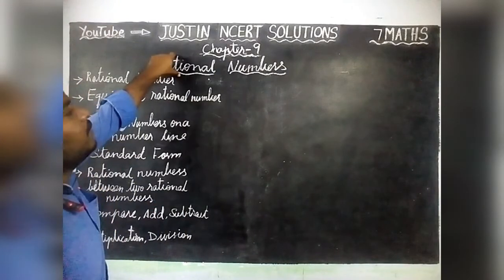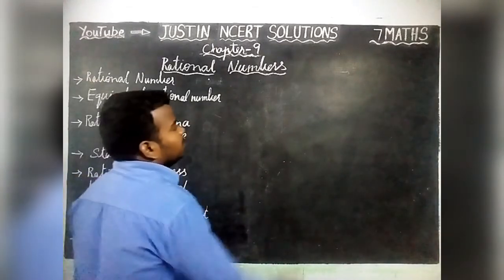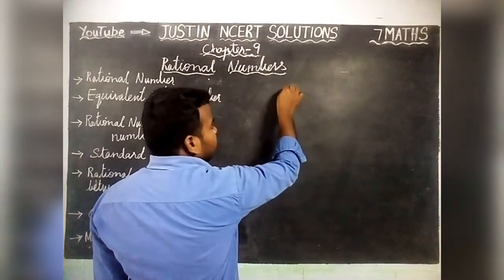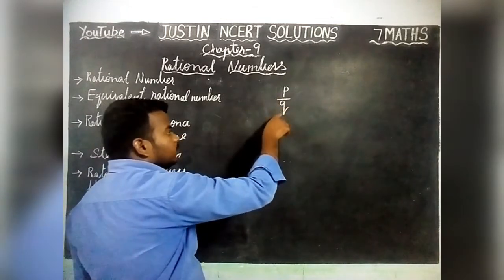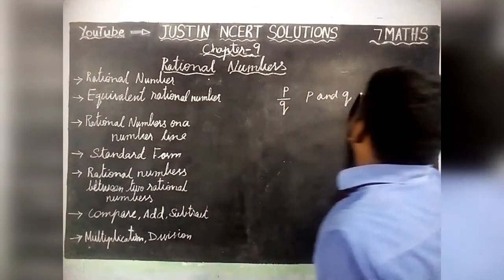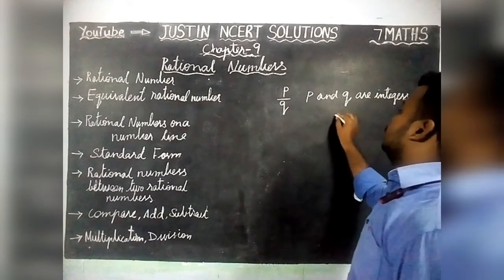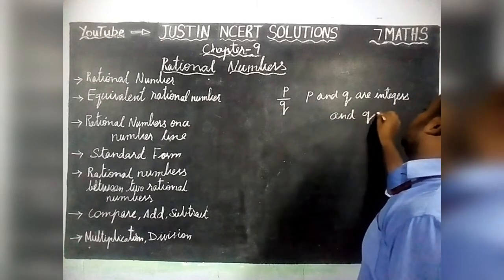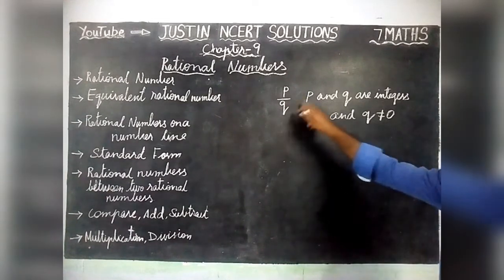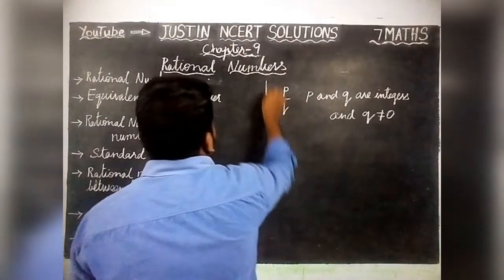Rational Numbers come from the word Ratio. A number that can be expressed in the form of P by Q, where P and Q are integers and Q is not equal to 0, is called a Rational Number.